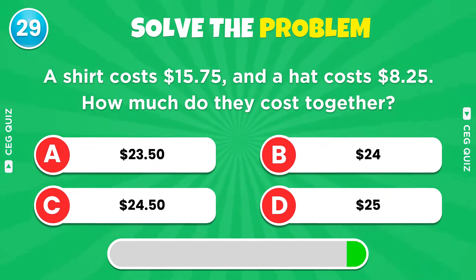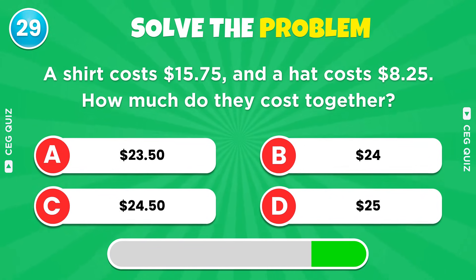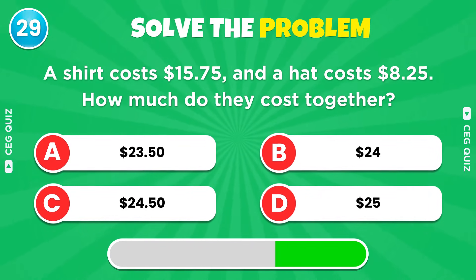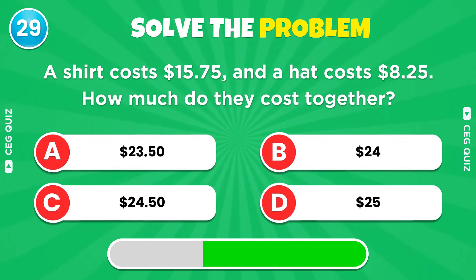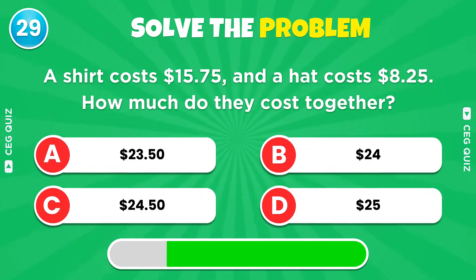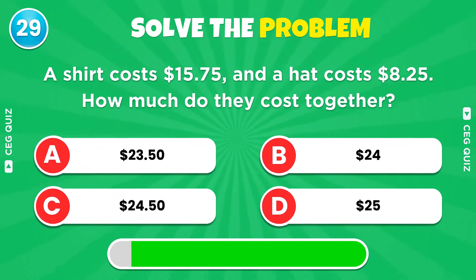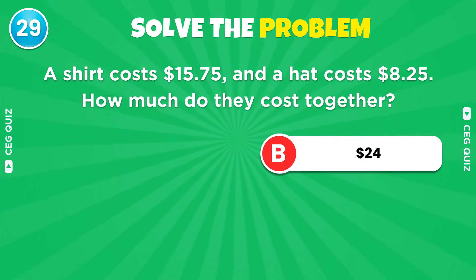A shirt costs 15 dollars and 75 cents and a hat costs 8 dollars and 25 cents. How much do they cost together? $24.